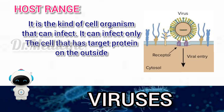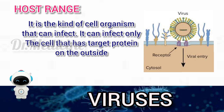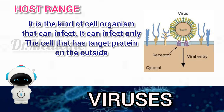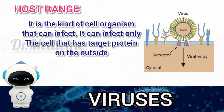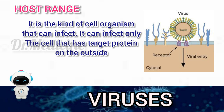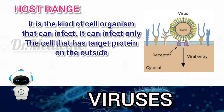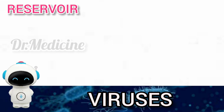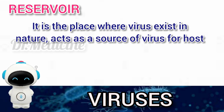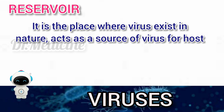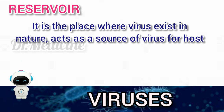The host range is the kind of cell or organism a virus can infect. It can infect only cells that have a target protein on the outside. For example, HIV only infects human helper T cells, while rabies infects any mammal. The reservoir is the place where a virus exists in nature and acts as a source of virus for hosts — for example, birds may cause bird flu.